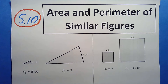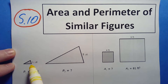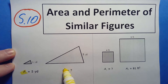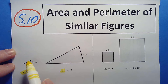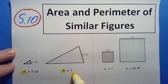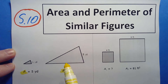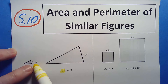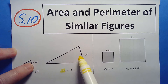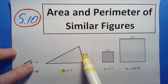We're going to be looking at problems like this, where we have a perimeter. We know the perimeter of this little triangle and we're trying to find the perimeter of this big triangle. All we know is that they're the same shape, and that this side compared to that side is one yard compared to five yards.